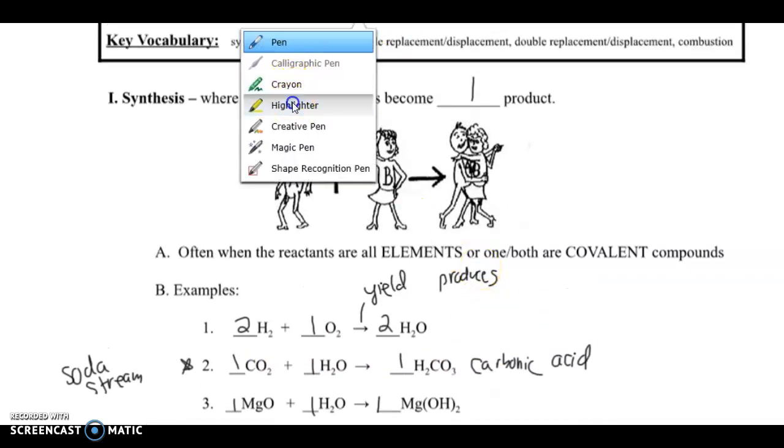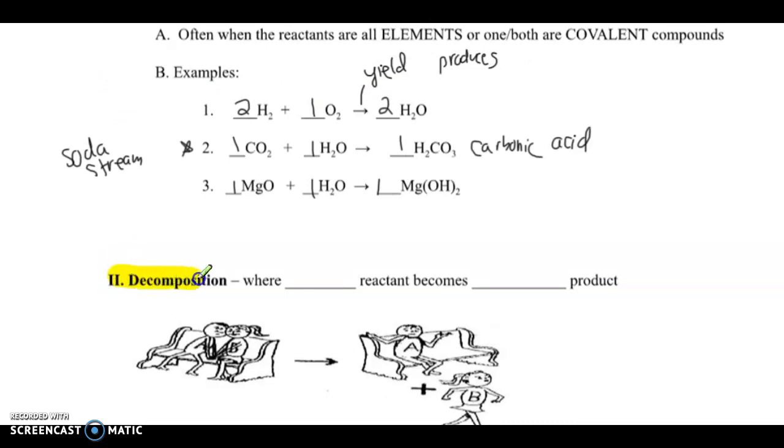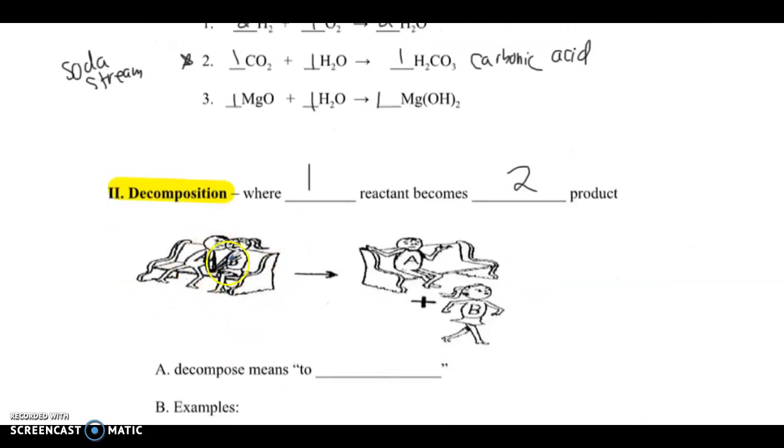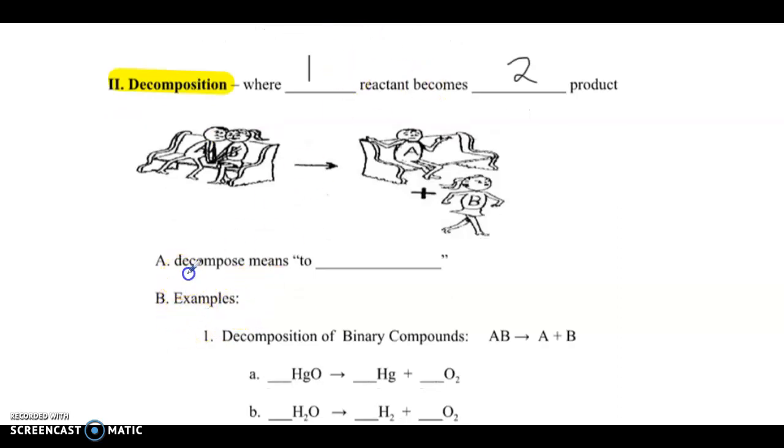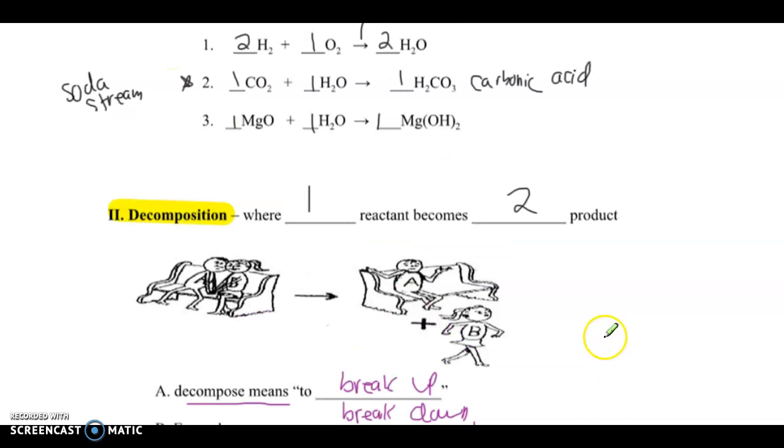So remember, when we're looking at a synthesis reaction, two things are becoming one. So the clue is that there are two reactants and only one product. And there's three types: the simple one where it's just elements, the more complicated one where we form an acid, and then the metal oxide and water becoming metal hydroxides. So the opposite of synthesis is pretty much decomposition. And that's going to be where one reactant becomes two products. So we have a couple here and they break up into two individuals.